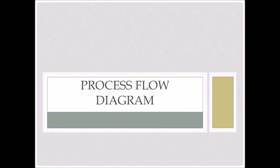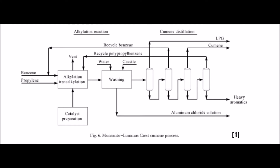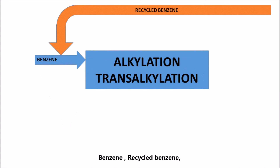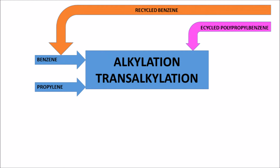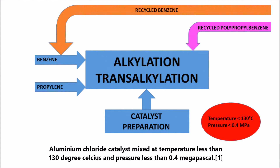Process Flow Diagram of Monsanto-Lummus Crest Cumene Process. Benzene, recycled benzene, propylene, and recycled polypropyl benzene were mixed into the alkylation and transalkylation reaction zone. Aluminium chloride catalyst was mixed at a temperature less than 130 degrees Celsius and pressure less than 0.4 MPa.